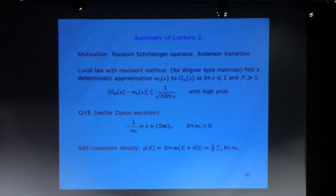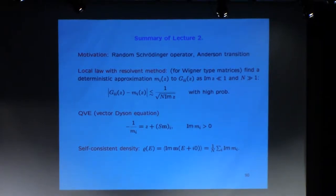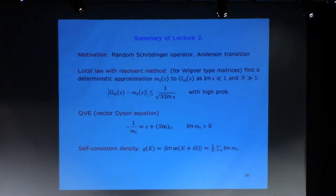The relevant regime is when the imaginary part of z is very small - that's the regime where the Stieltjes transform or the resolvent carries very valuable information about the local distribution of the eigenvalues. The imaginary part of z is always very small, and N is always very big. Also, the imaginary part of z cannot be too small; it has to be above 1 over N, otherwise the resolvent will become truly fluctuating. This bound reflects that, as the control is in terms of 1 over sqrt(N) times Im(z).